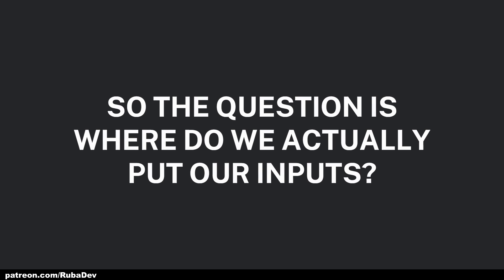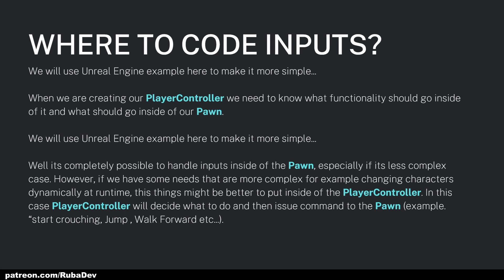The question is: where do we actually put our inputs? When creating our Player Controller, we need to know what functionality should go inside the Player Controller and what should go inside the Pawn. It's completely possible to handle inputs inside the Pawn, especially if it's something less complex. However, if we have more complex needs — for example, changing our character dynamically at runtime — these things might be better placed inside the Player Controller, which will then issue commands to the Pawn such as crouching, jumping, or walking forward.